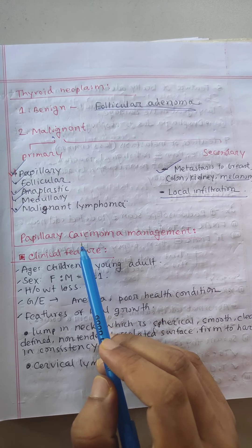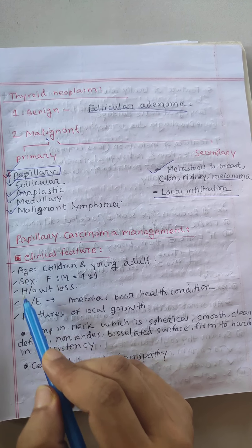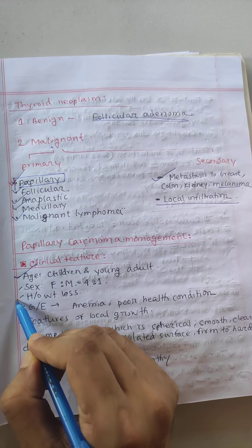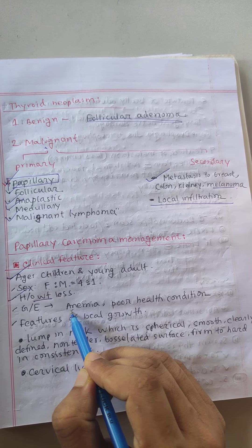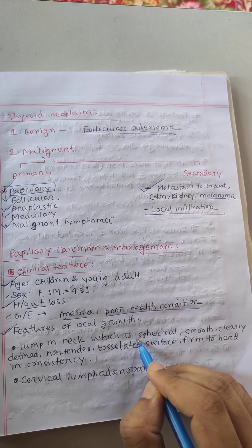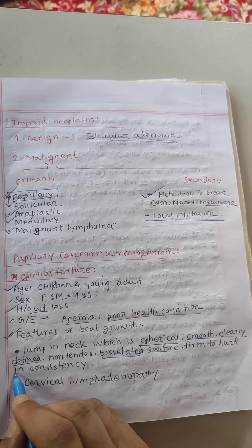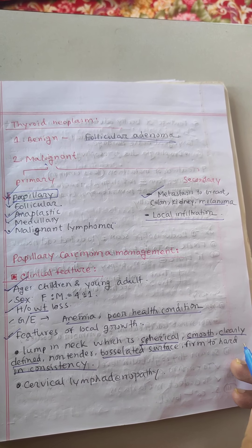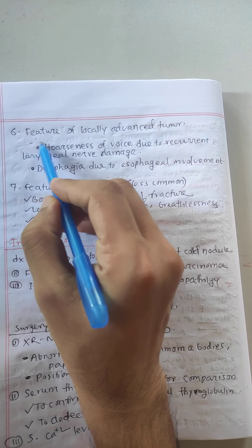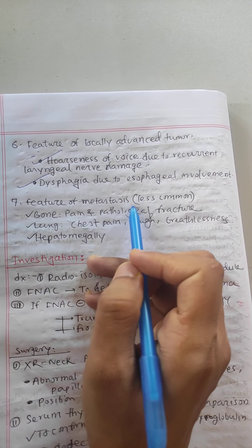Papillary carcinoma is the most common thyroid carcinoma. Clinical features - age: children and young adults. Sex: male to female ratio is 1 to 4. History of weight loss. General examination - anemia and poor health condition. Feature of local growth - a lump in the neck which is spherical, smooth, clearly defined, non-tender, and bosselated surface, firm to hard consistency. Then there will be cervical lymphadenopathy. Features of locally advanced tumor - hoarseness of voice due to recurrent laryngeal nerve damage and dysphagia due to esophageal involvement. Features of metastasis - less common - bone: pain, pathological fracture; lung: chest pain, cough, breathlessness; and hepatomegaly.